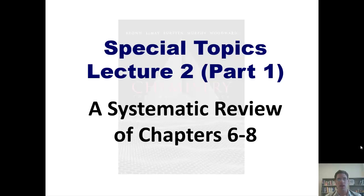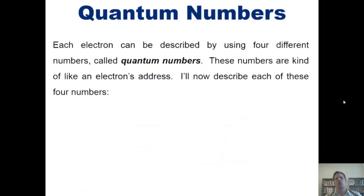Are you guys ready? Let's go ahead and get into it. So each electron in an atom can be described by using four different numbers called quantum numbers. These numbers are kind of like an electron's address. I'll now describe each of these four numbers.